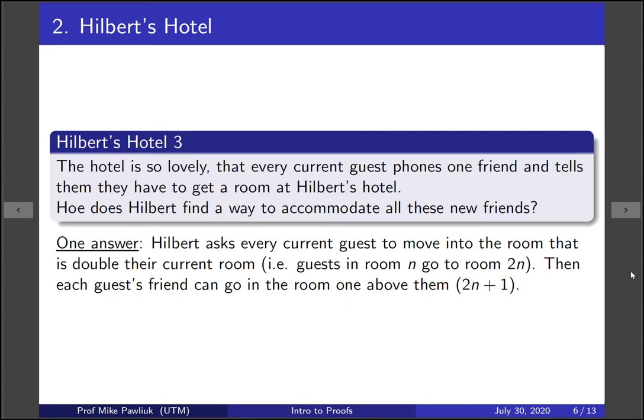So one possible answer to this is that Hilbert asks every current guest to move into the room that is double their current room. So if you're in room n, go to room 2n. Then each guest's friend can go into the room that's one above them. So 2n plus 1.